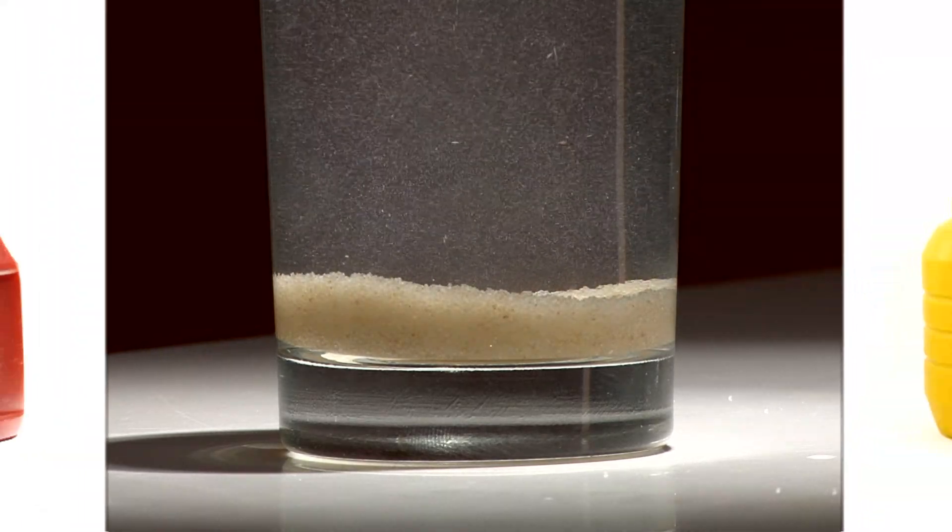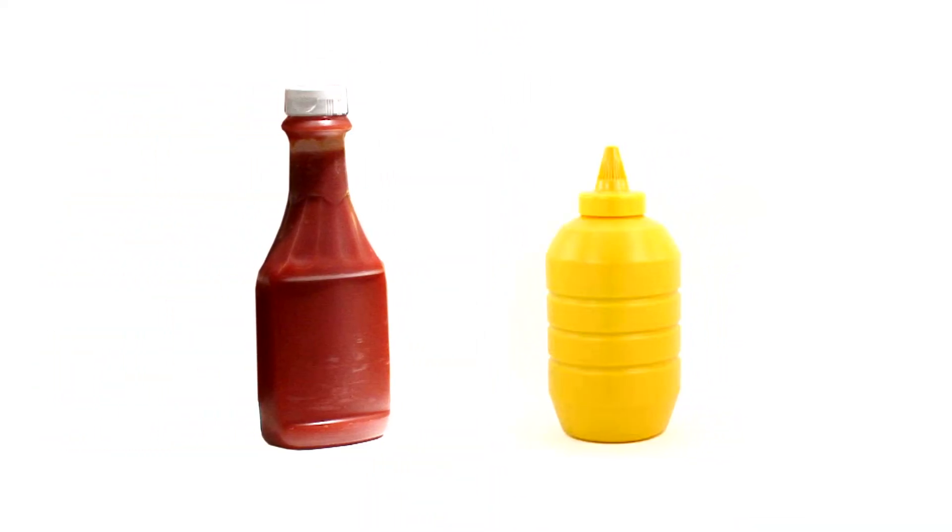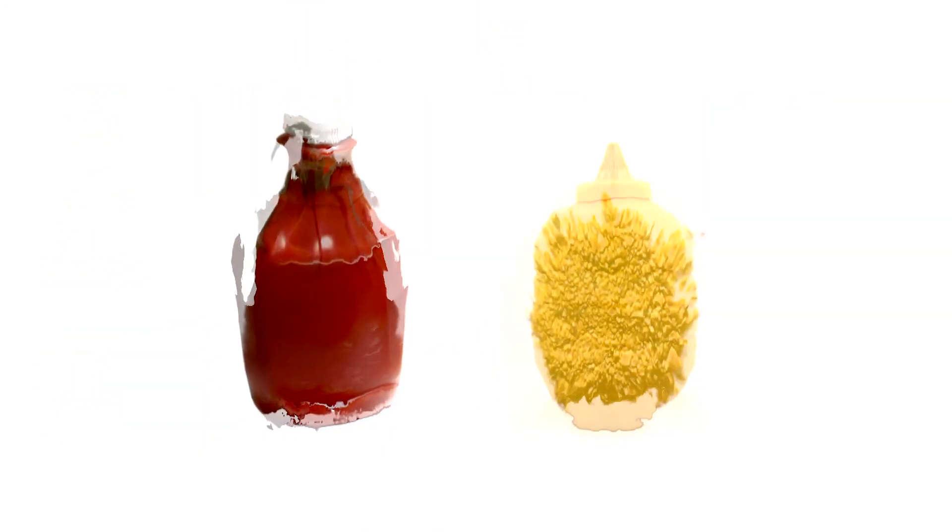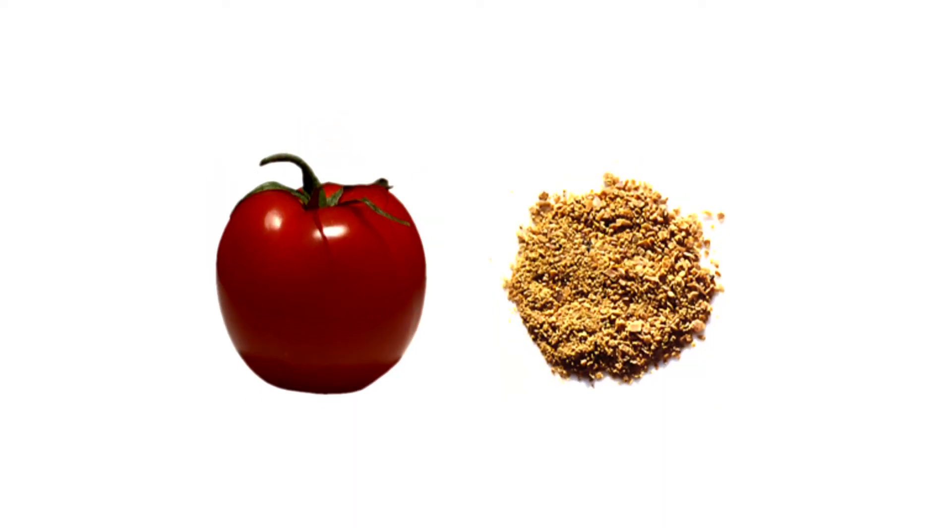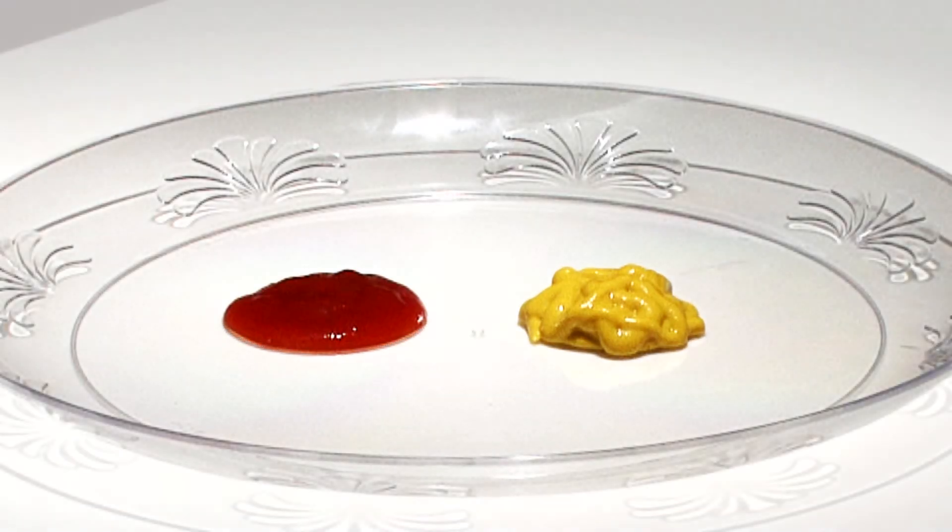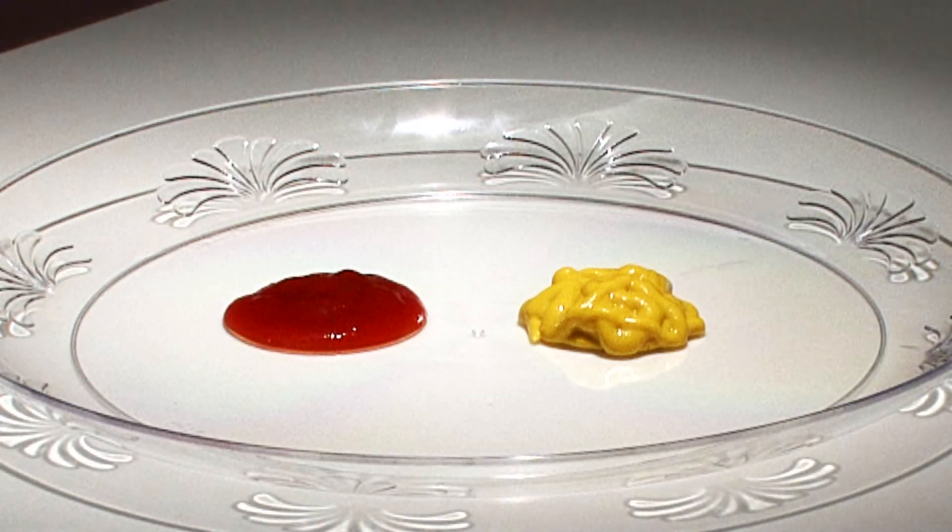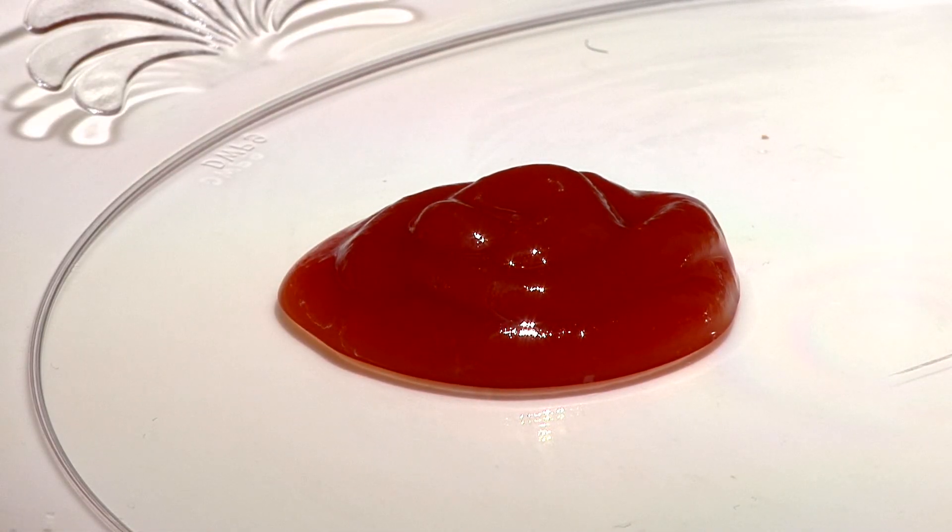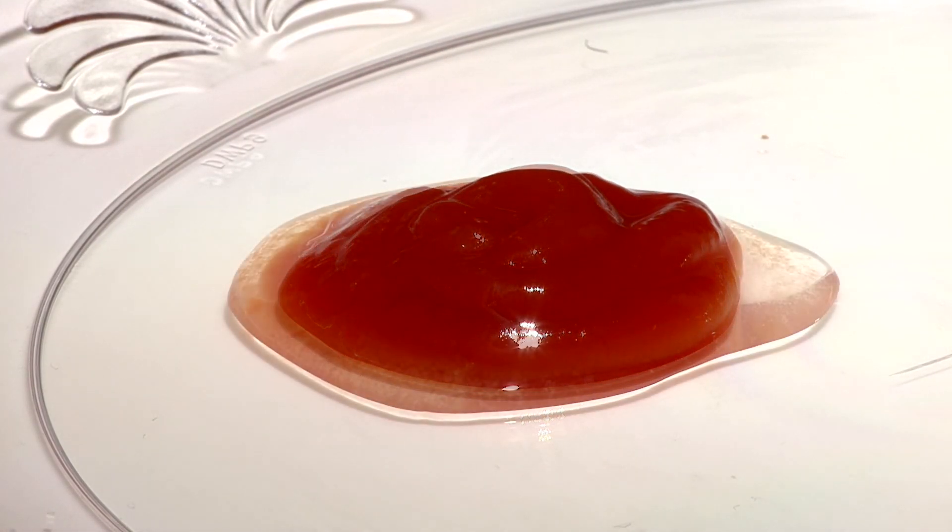I would put ketchup and mustard into the category of suspensions. They're just the particles of vegetable materials, mustard seed or tomatoes, that are ground up and then distributed, dispersed, throughout an aqueous water phase to create our sauce. If we wait long enough, we'll see the liquid components separate from the solid particles.